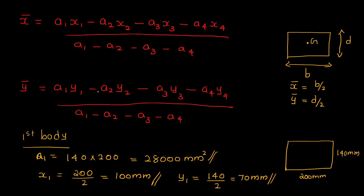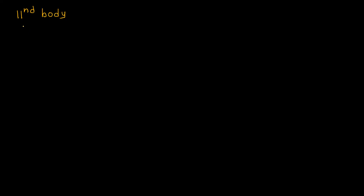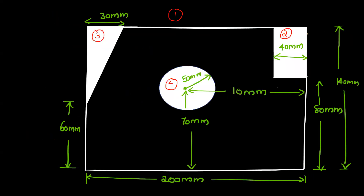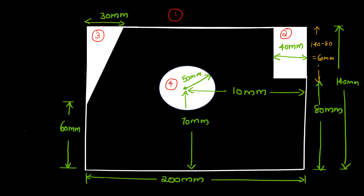The first body values are established. Now we move to the second body. The second body is a rectangle. The relevant dimension is 100 mm, and the value is 60 mm.